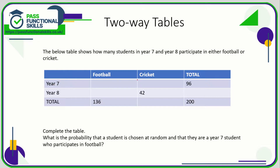So what we've got here is year sevens — some of them do football, some do cricket. This is the total number of students in year seven. For year eight, some do football, we know 42 do cricket, but we don't know the total. Here is our total row. We know the grand total that do football — year sevens and year eights combined — is 136. In here would be the total of cricket from year seven and year eight. And here we've got the grand total, which is all of the year sevens and all of the year eights added up — that's also all of the football plus all of the cricket. So we know there's a grand total of 200.